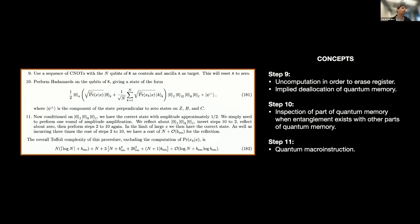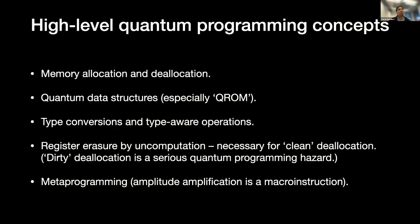Step 9 again involves uncomputation to erase a register, with implied deallocation of quantum memory. Step 10 involves inspection of part of the quantum memory even when there's entanglement with other parts. Step 11 is actually the one there's most to say about — it's a quantum macro instruction — which is why I'm saying the least about it.